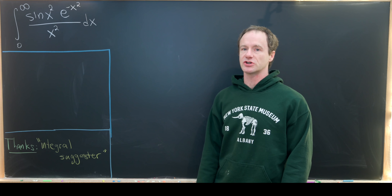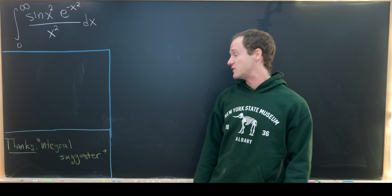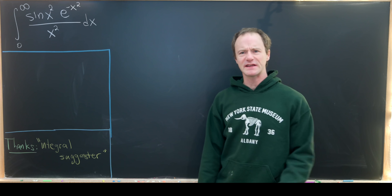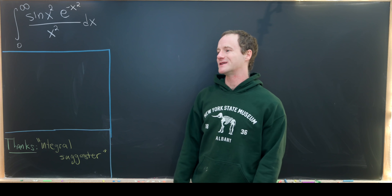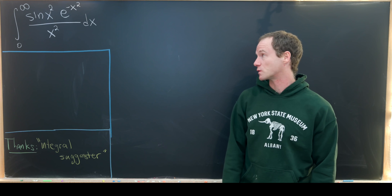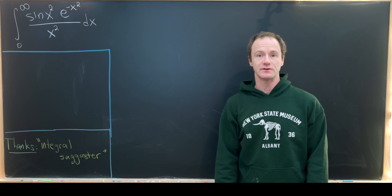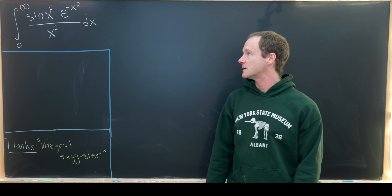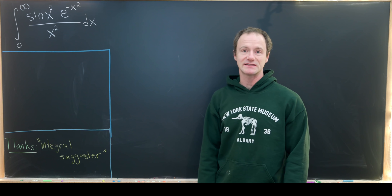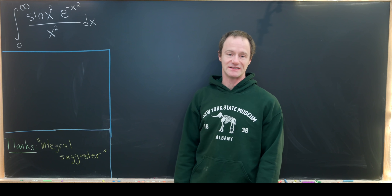Here I've got a nice integral to show you, and this comes from a viewer that I'll call the integral suggester, because this person always sends me the nicest integrals to work out. We have the integral from 0 to infinity of sine of x squared times e to the minus x squared over x squared dx.